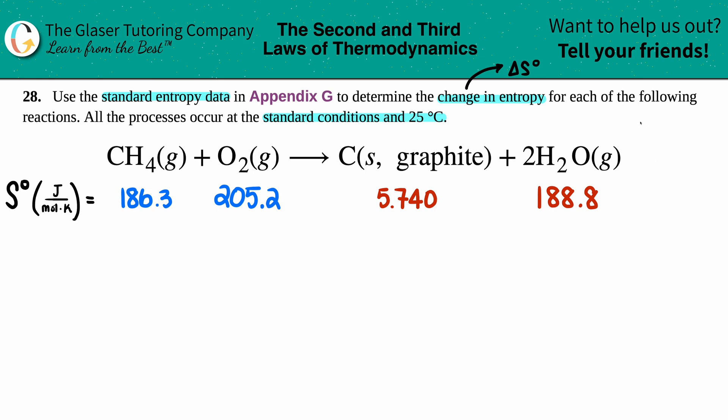Now we can kind of guesstimate what the delta S value is going to be, whether it's a positive or a negative. Remember that entropy is talking about disorder or chaos or randomness in the container. So in this case, if you're starting off with gases and gases are the most chaotic, they got a lot of problems, but gases, they're most chaotic. They're most disordered. They're all over the place.